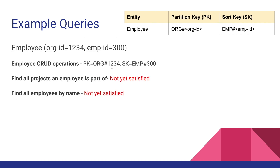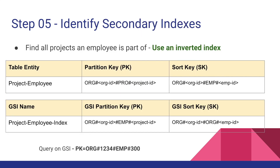We can do CRUD operations for employees in a similar manner, but we still cannot find all the projects an employee is part of, and we cannot find projects by name. Moving on to step five: identifying secondary indexes to satisfy these remaining access patterns. This access pattern — finding all projects an employee is part of — requires using an inverted index to query the other side of the many-to-many relationship.